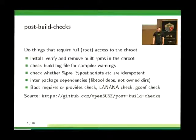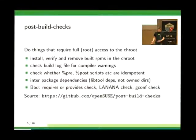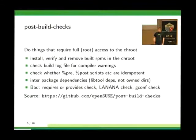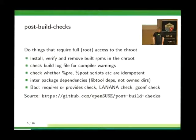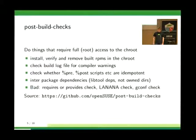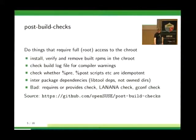There are also bad examples in post-build checks — legacy scripts as well. For example, a requires-and-provides check that only works within the package itself, which doesn't make sense and should be moved to RPM-Lint. Same for the lanana check, which looks at init scripts and cron scripts and prints a warning if they are not in the lanana registry — that doesn't need to run as root and should be moved to RPM-Lint. Same for the gconf check. The source for the post-build checks is on GitHub as well, though the shell scripts are quite ugly.